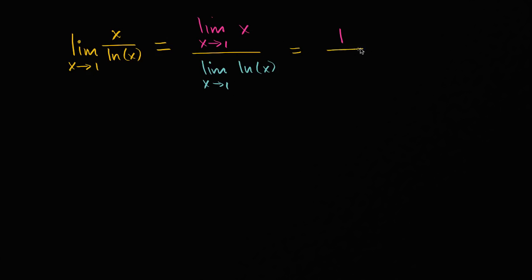And then the denominator, natural log of x is not defined for all x's and therefore it isn't continuous everywhere. But it is continuous at x equals one.